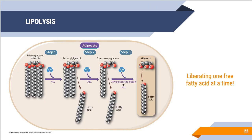The classic steps of lipolysis involve taking that triglyceride and breaking it down: removing one free fatty acid gives us diacylglycerol; removing another gives monoacylglycerol; and removing the last one, we're left with that glycerol backbone. This process involves the liberation of one free fatty acid at a time.